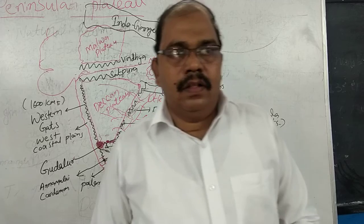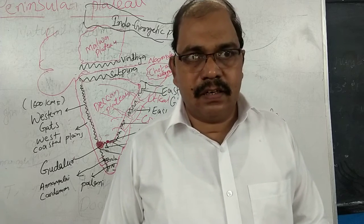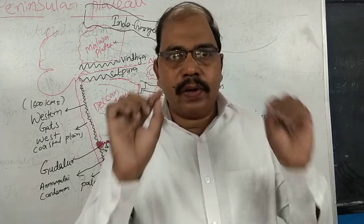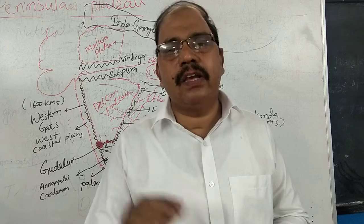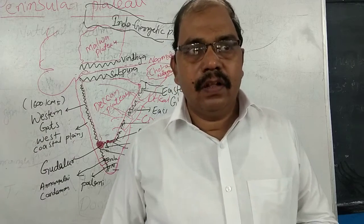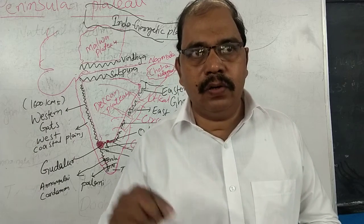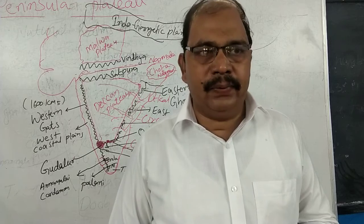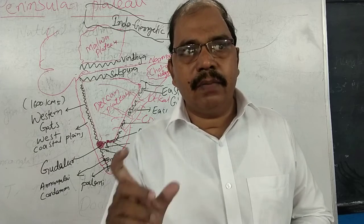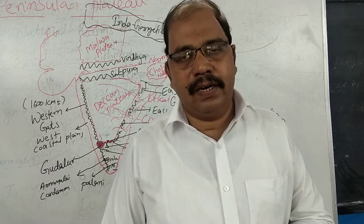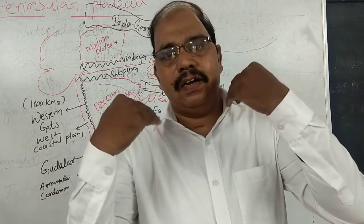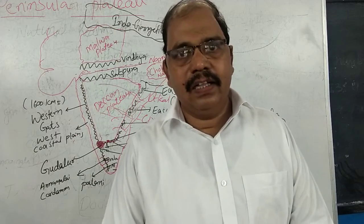In the first lesson we learned about the location of India, then the Himalayas, then the Indo-Gangetic Plain. Today we are going to read about the Peninsular Plateau. It is called a peninsula because the landmass is covered by water on three sides: the east side by a sea, the west side by a sea, and the south side by the Indian Ocean, with land on the north side.